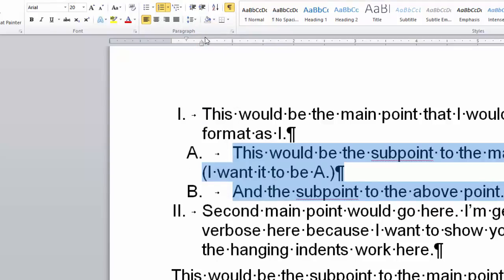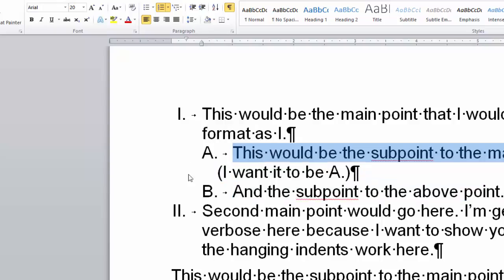Now, it's not exactly perfect. I do need to change my hanging indents. For example, I want to make sure that the A is right under the T and the F in that first main point. And also, I'm going to need to fix the hanging indents because I've got large font here, and I need to have it go in five spaces.